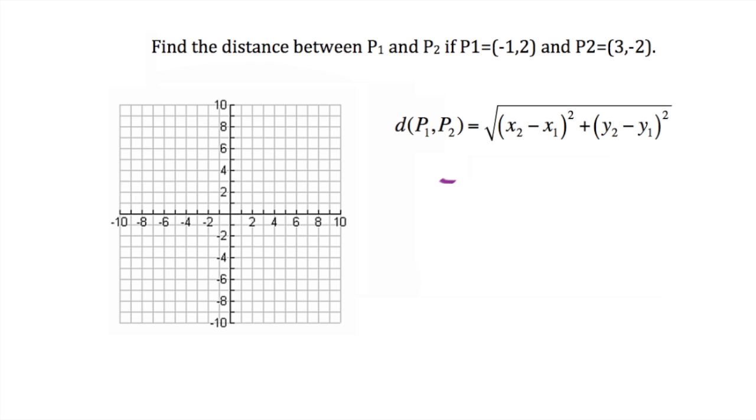We would take the square root of the difference of x2 minus x1, so we would take 3 minus negative 1, we would square that result, and we would add it to negative 2 minus 2, square that,